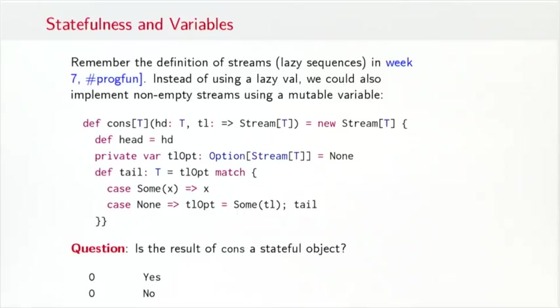So the question now is, is the result of cons a stateful object? If you hesitated in your answer, I don't blame you because in fact, in a sense, both the yes and the no are valid responses, depending on what assumptions you make on the rest of your system. One common assumption is that streams should only be defined over purely functional computations. So the tail operation here should not have a side effect. In that case, the optimization to cache the first value of tail in tail opt and reuse it on all previous calls to tail is purely an optimization that avoids computations, but that does not have an observable effect outside the class of streams. So the answer would be that no, streams are not stateful objects.